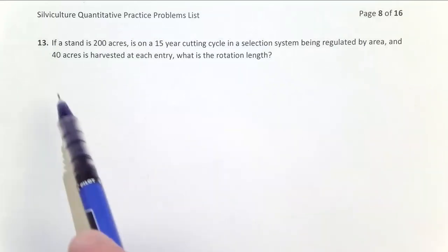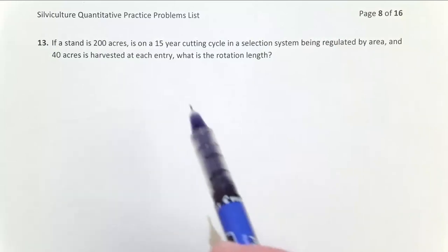And we know that the loggers need to harvest 40 acres in each entry in order to make this merchantable. And so what we want to do from all this is figure out if we use these assumptions, what is our rotation length going to be?